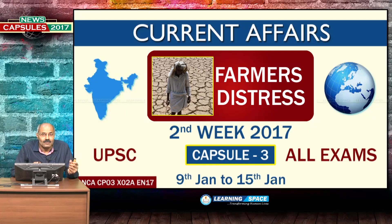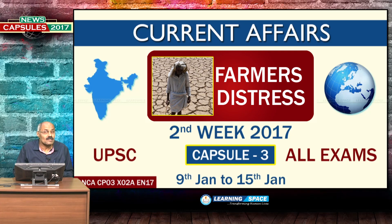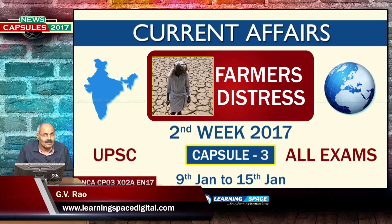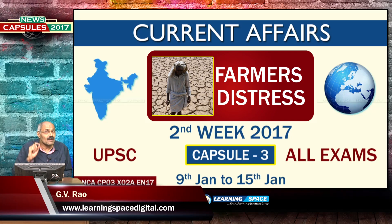Welcome back to third capsule. This is on farmer's distress. Tamil Nadu was declared as a drought state because of the failure of the northeast monsoon, and farmers suffered badly. In this context, we are going to deliberate on farmer's distress.